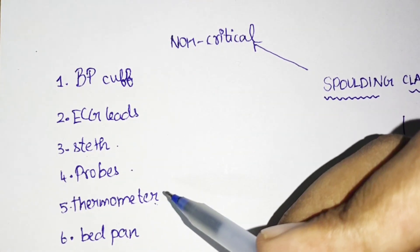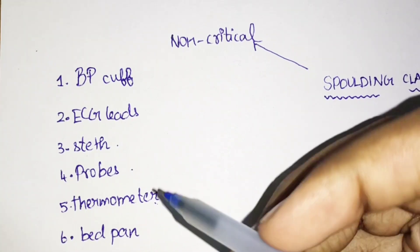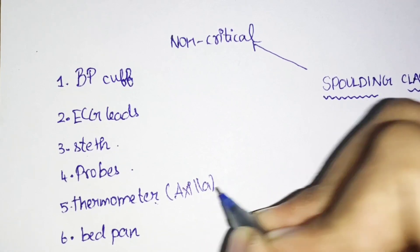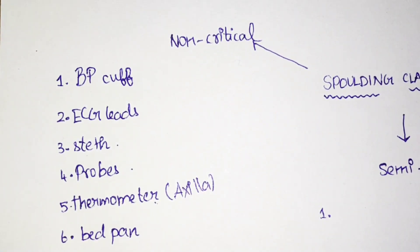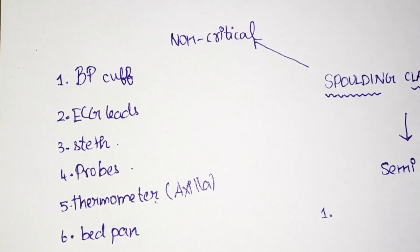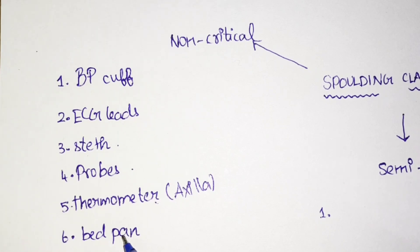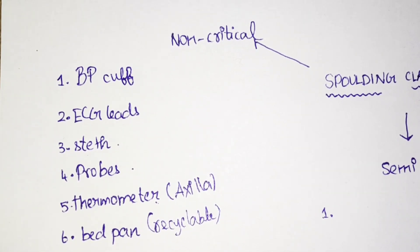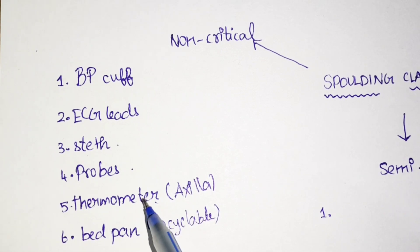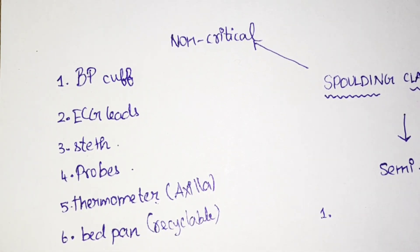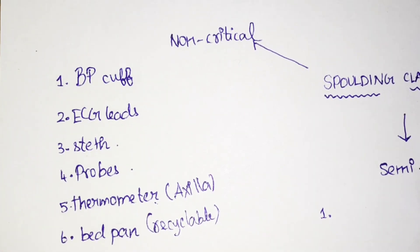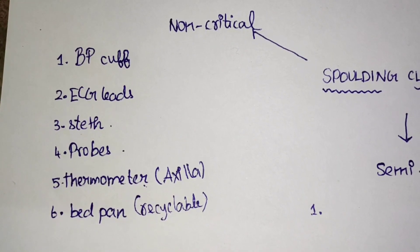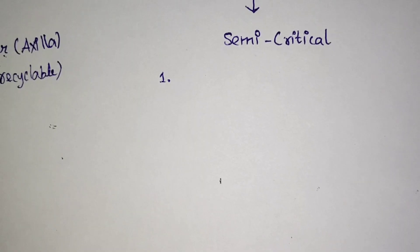If the thermometer is kept in the axilla, it is non-critical. For bedpans, there are two types: a recyclable bedpan comes under non-critical, while a steel bedpan comes under semi-critical. Similarly, if the thermometer comes in contact with mucous membrane — for example, if you place the thermometer in the mouth of the patient — it will come under semi-critical.